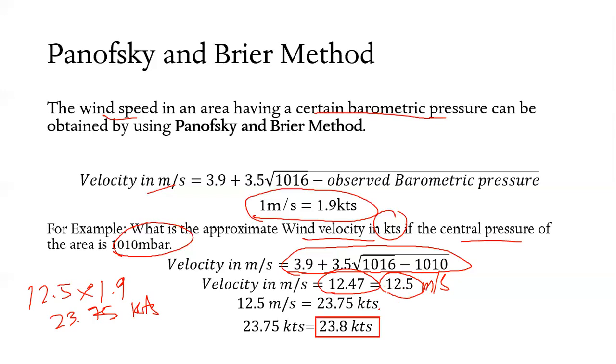But that is not your final answer. Your final answer should be rounded off to the nearest tenth. Final answer will be 23.8 knots. That will be your approximate wind velocity with the 1010 millibars.